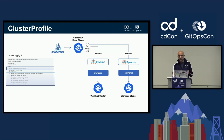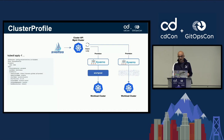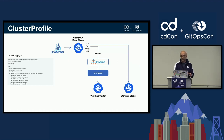Just as you can ask Sveltos to deploy add-ons in a cluster, you can also ask it to remove resources. So if we remove the label environment production from the second cluster, that cluster is no longer a match for the ClusterProfile, and Sveltos simply goes and removes all the add-ons that were deployed in that cluster because of this ClusterProfile.